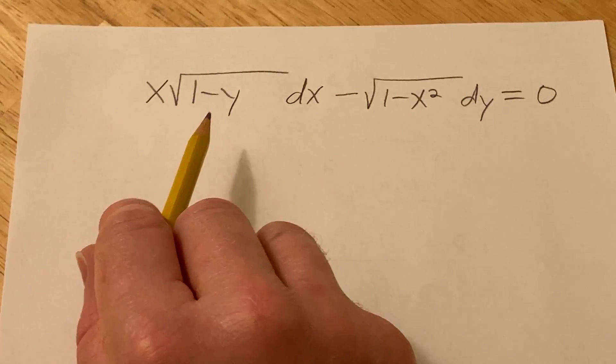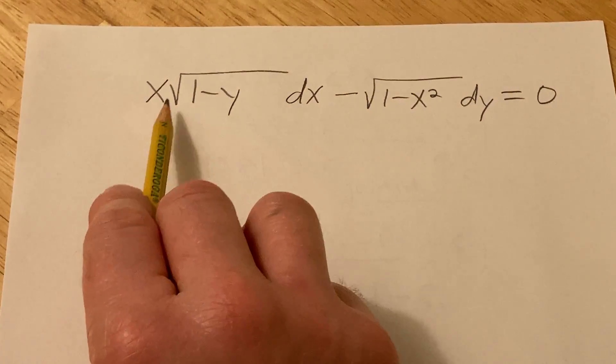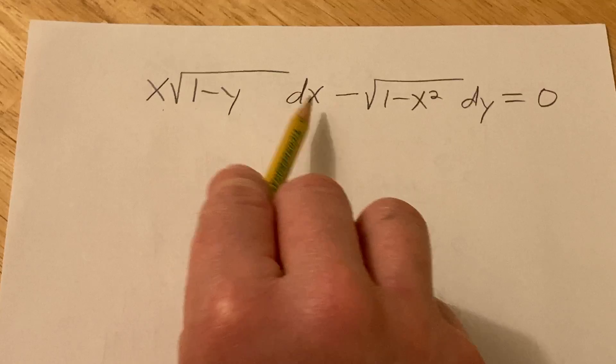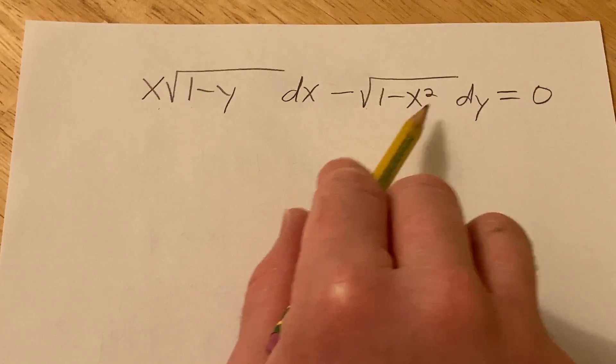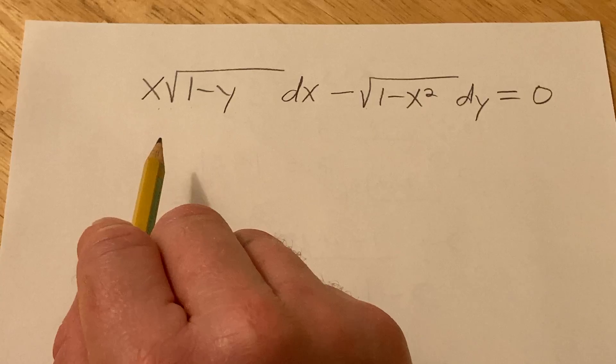Hi, in this video we're going to solve this differential equation. We have x times the square root of 1 minus y dx minus the square root of 1 minus x squared dy, and that's equal to 0.